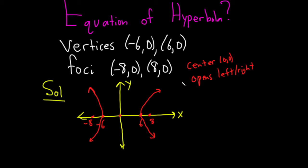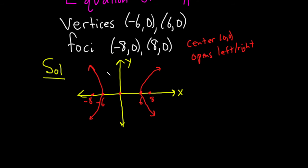And so the way I memorize this is whenever it opens left and right, the x comes first. If it opens up and down, the y comes first. And so because the center is (0, 0), it's going to look like this: x²/a² - y²/b² = 1. That's the formula we're going to use because the x comes first because it opens left and right. If it had opened up and down like this and like this, then it would be y²/a² - x²/b². But it's left and right, so the x comes first.